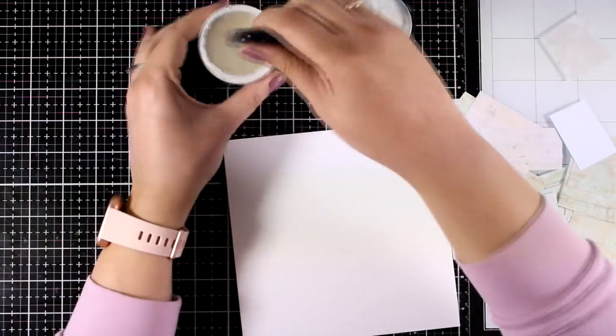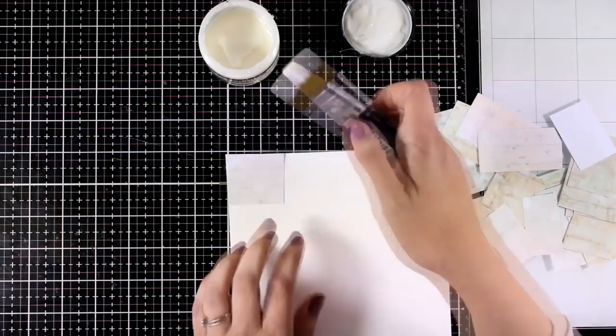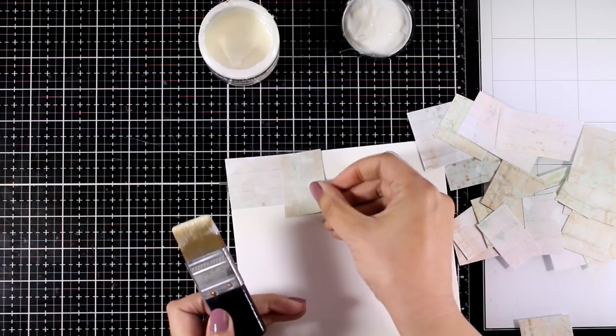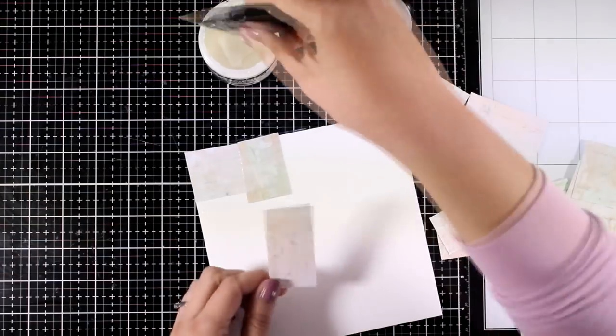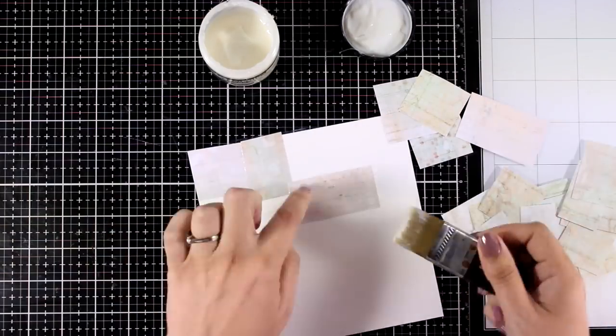Now it's time to put everything together. I'm working with my matte medium here and I'm going to stick everything down. I'm using a generous amount of matte medium on my watercolor paper, then I apply the little piece on top, and then I go over it again with matte medium just to make sure they're going to stay in place.